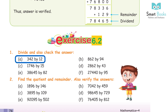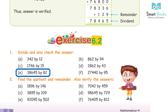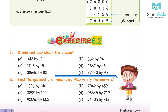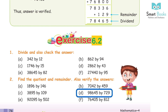Exercise 6.2, Question 1 — divide and check the answer: a) 342÷12 = 28 remainder 6, b) 862÷94 = 9, c) 1746÷15 = 116, d) 2862÷43 = 66, e) 38645÷82 = 471, f) 27440÷95 = 288. Question 2 — find the quotient and remainder: a) 8096÷146: quotient 55, remainder 106, b) 7042÷459: quotient 15, remainder 157, c) 3895÷109: quotient 35, remainder 90, d) 98645÷729: quotient 135, remainder 230, e) 92095÷502: quotient 183, remainder 229.